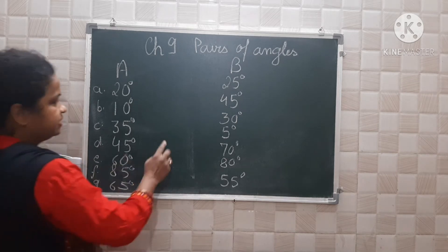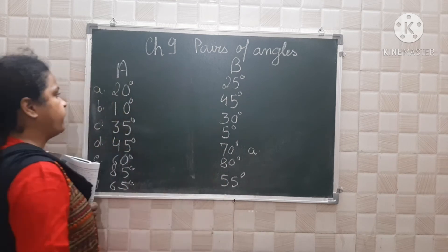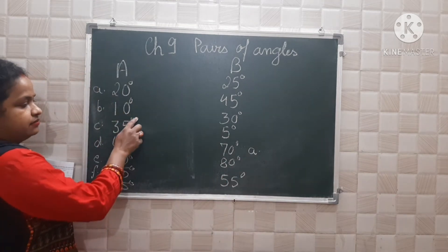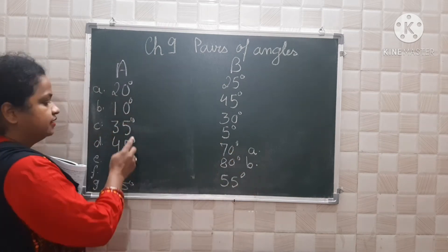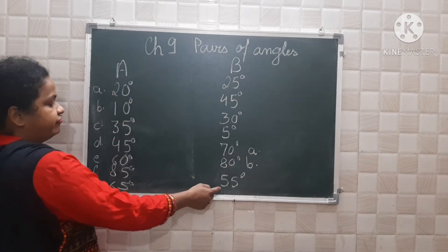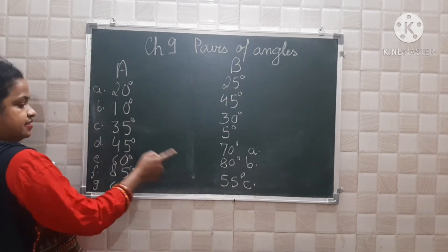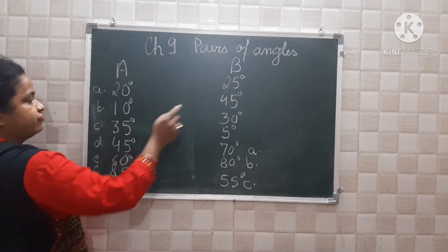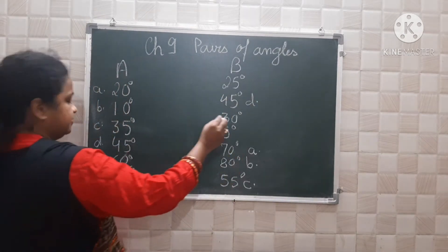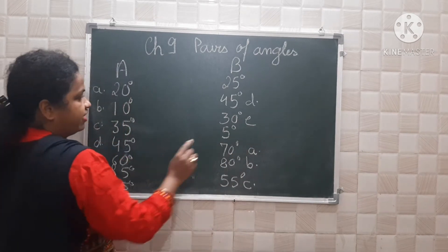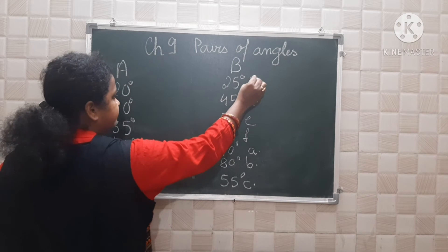Now, 20 degrees means 20 plus 70 equals 90, so this will be your A. Then 10 plus 80 equals 90, that means this is B. 35 plus 55 equals 90 degrees, that is D. 60 and 30, that is E. 85 and 5, that is F. And 65 plus 25, that is G.